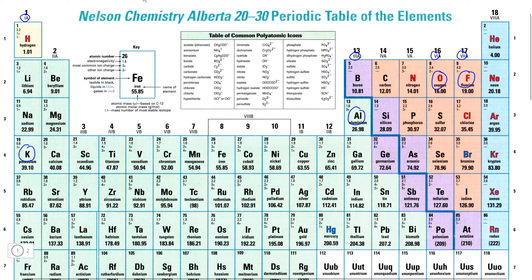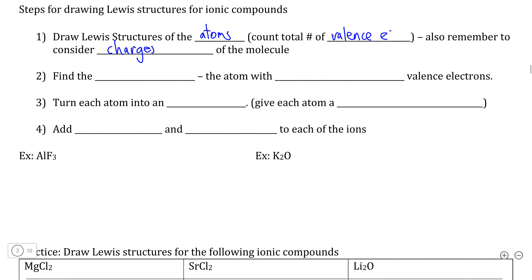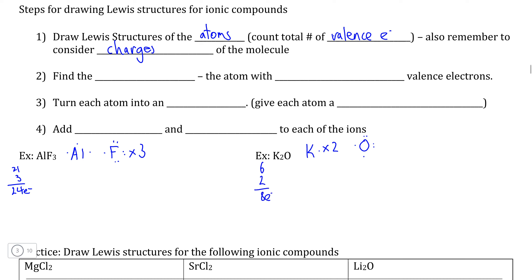Oxygen in group 6A will have six valence electrons. For aluminum fluoride, fluorine has seven valence electrons, seven times three is 21, and aluminum has three valence electrons, so 21 plus three is a total of 24 electrons. For potassium oxide, each of the two potassiums has one valence electron and oxygen has six, so six plus two gives us a total of eight valence electrons.